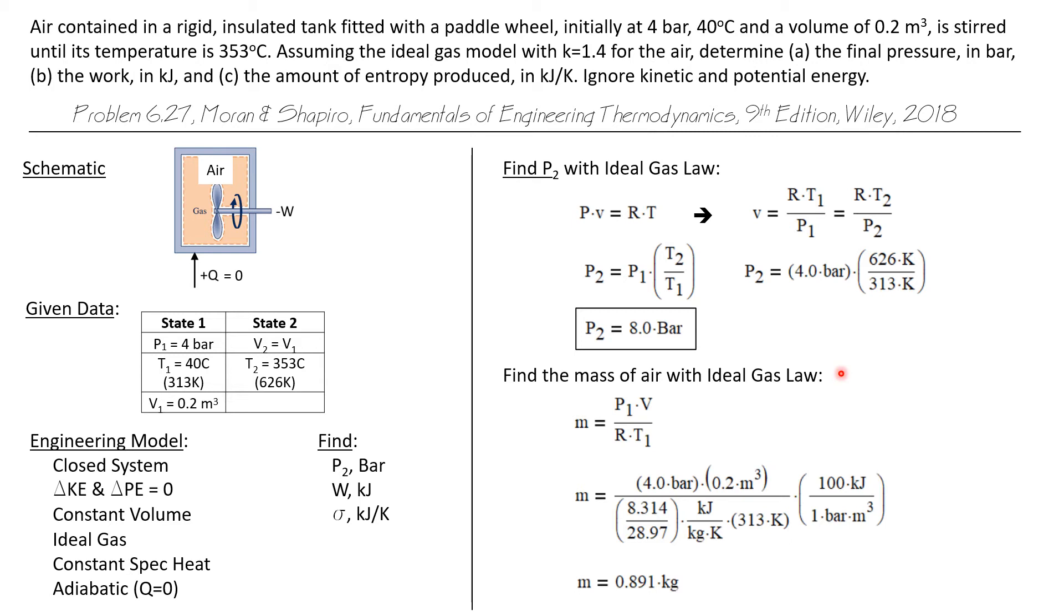Now we want to find the mass. And we can also do that with a different form of the ideal gas law. Remember that PV is MRT. So we can rewrite that as M, the mass, is PV over RT. And we'll do this at state one conditions where all of our necessary properties are known.